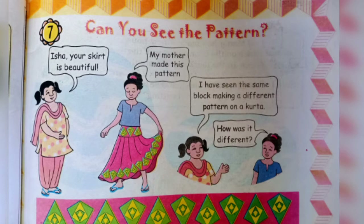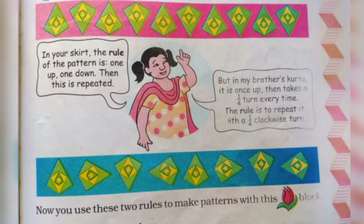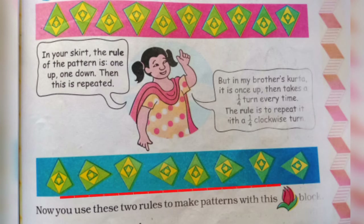Isha asks, 'How was it different? If the same block is used, how can the skirt pattern and the kurta pattern look different?' Her friend explains: 'In your skirt, the rule of the pattern is one up and one down, and then this is repeated. The same block is used but the design is made by repeating that rule.'